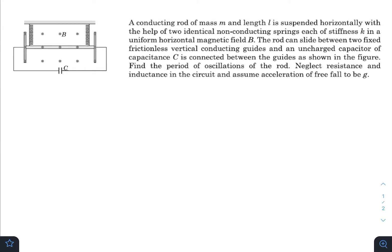Hey, what is up everyone, I hope all of you are doing great. In today's question we have a conducting rod of mass m and length l suspended horizontally with the help of two identical non-conducting springs, each of stiffness k, in a uniform horizontal magnetic field as you can see in the diagram.